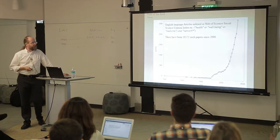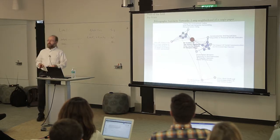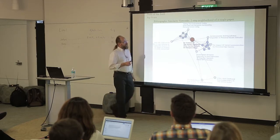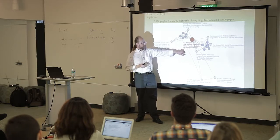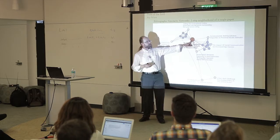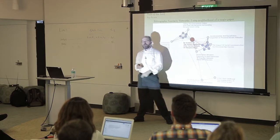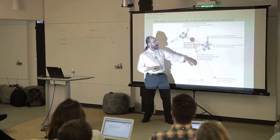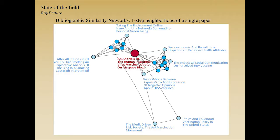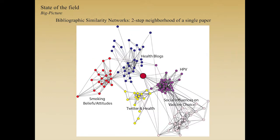I set myself the challenge of figuring out how to summarize the 18,000 papers published since 2000. Instead of reading you the titles of each one, I turned it into a network using bibliometrics — we take each paper and connect it to other papers if it shares lots of words using a cosine similarity score. This paper on human papillomavirus vaccine debate on MySpace blogs is somewhat similar to other papers about HPV, smoking, and the environment. If you take all papers and do this with all other papers, you generate a network, and this paper actually sits at the intersection of five different clusters.